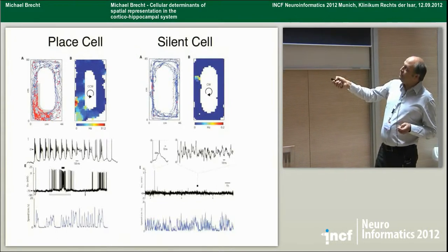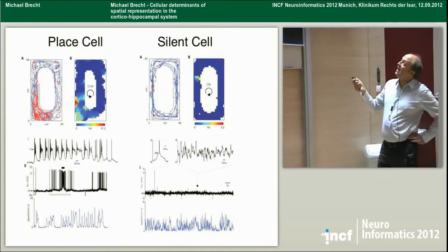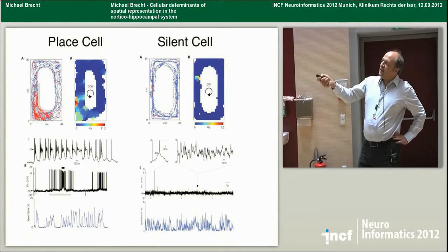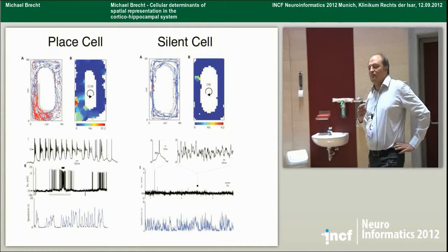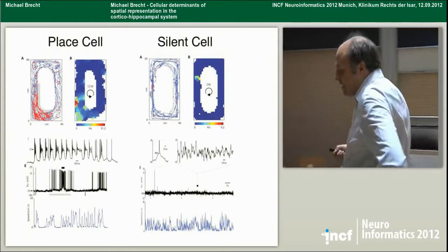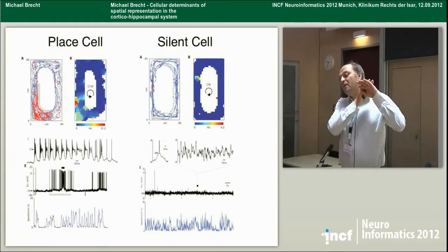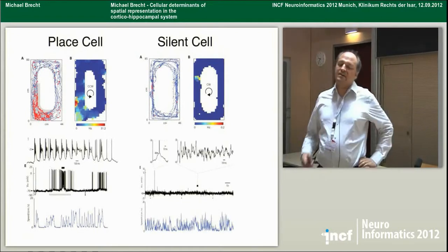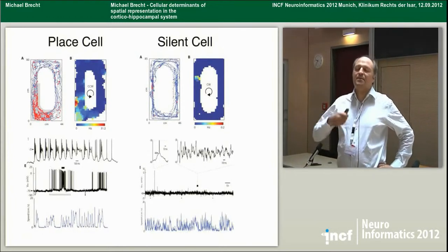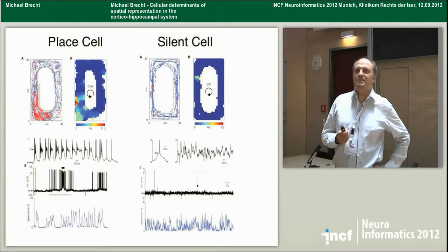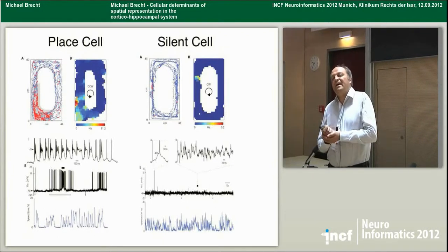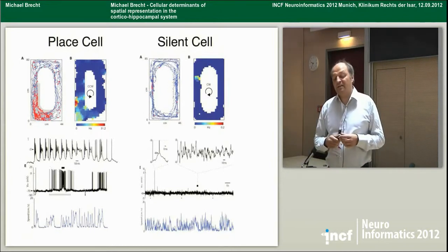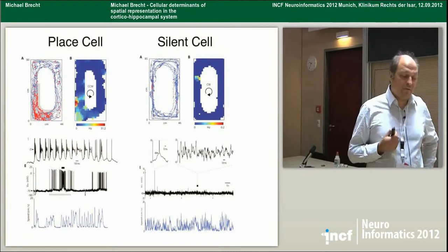The other class of cell we see are silent cells — the animal runs around and there are very few spikes fired, and the membrane potential is just rock steady. We recorded these first cells in Holland. The membrane potential is just flat. This was surprising to us. Most of all we have very few cells — patching in freely moving animals is exceedingly difficult — but it looked very much like they come in two flavors: the flat silent ones and the ones with the peak.